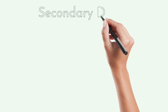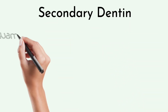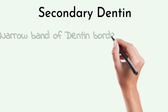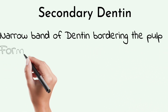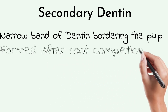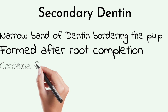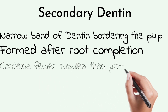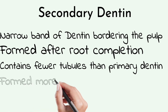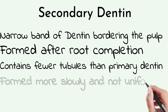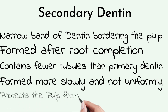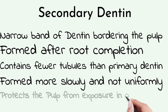Secondary dentine is a narrow band of dentine bordering the pulp. It is formed after root completion, contains fewer tubules than primary dentine, forms more slowly and not uniformly, and its main function is to protect the pulp from exposure in older teeth.